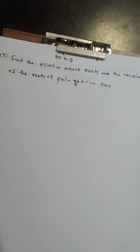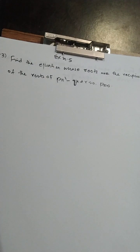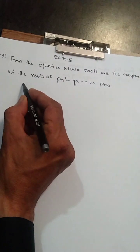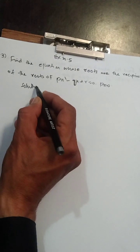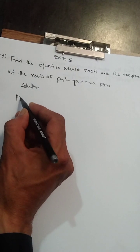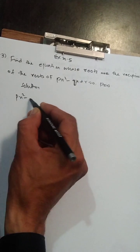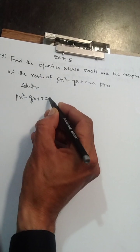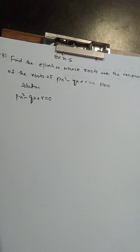Exercise 20.5 ka part number 3 hai: find the equation whose roots are the reciprocal of the roots of px² - qx + r = 0, where p is not equal to 0. Solution: given equation px² - qx + r = 0.